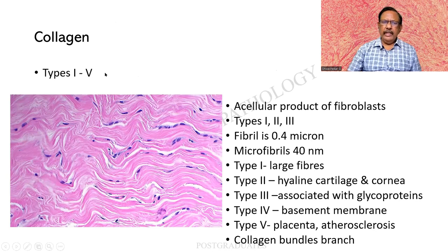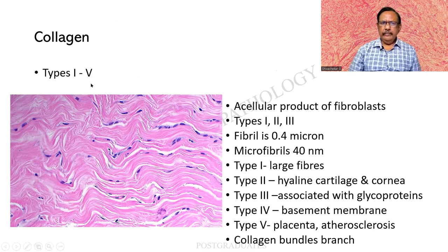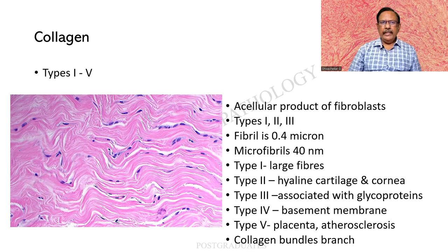There are different types of collagen — this by itself is a question for us. There are five types of collagen fibres as given by Culling. What I find here are wavy, pale structures composed of multiple fibrils that in turn form bundles. The bundle may branch, but the individual fibrils do not branch. The fibril is about 0.4 microns in diameter, and there are microfibrils which are 40 nanomicrons.